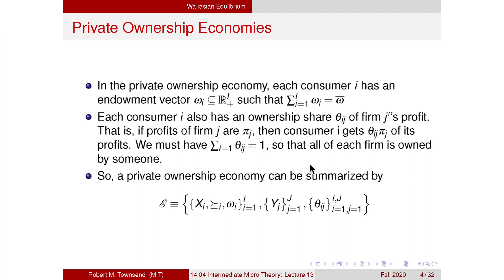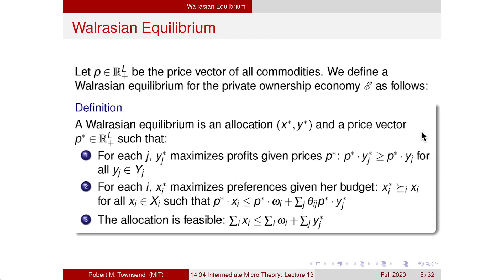Each consumer also has a share of the profits of firms. Theta_ij is the share that household i has of firm j's profits. These shares sum to one over all households for a given firm j, so everything gets distributed. Household i receives theta_ij times pi_j for firm j. Pi_j is endogenous — it could be zero with constant returns to scale, or positive with diminishing returns.